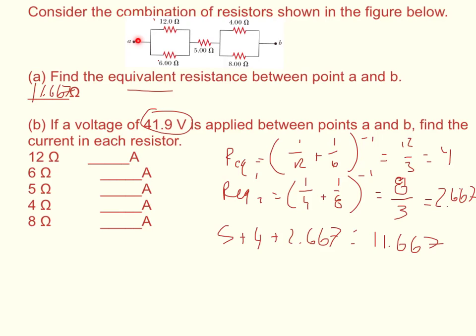So if we find the equivalent current, delta V over R equals I. And we'll call it I1 because it actually splits off in a couple places. So it's equal to I1. So delta V is 41.9, 41.9 over 11.667. And you should get that the current, the equivalent current I1, is equal to 3.591429. So we can put 3.59 right here.